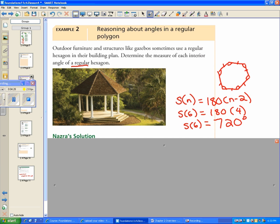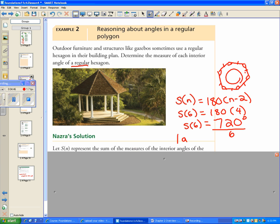So 720 is the total amount of degrees inside here. But what I want to know is how much one single angle is. So there's 6 angles in total, so I need to divide by 6 to get just 1. So 1 angle... what's 72 divided by 6? Sorry, 720 divided by 6 is 120. So 1 angle has 120 degrees.